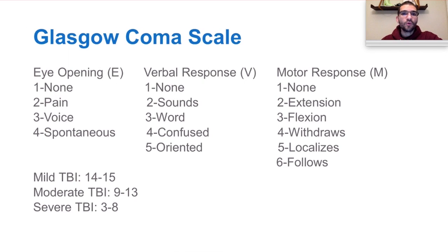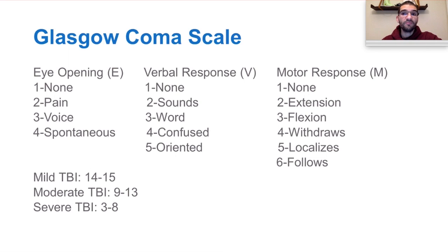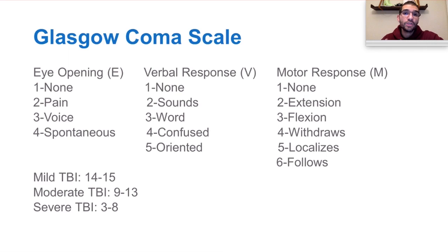The Glasgow Coma Scale allows us to define the severity of traumatic brain injury as mild, moderate, or severe using the best eye-opening response, the best verbal response, and the best motor response. For example, if somebody spontaneously opens their eyes when you walk in the room, they get a score of four. If they don't open their eyes no matter what — whether you yell or pinch them — they get a score of one. For verbal response, if they are completely oriented and having a conversation, it's a score of five; if they are just moaning and making sounds, they score a two.